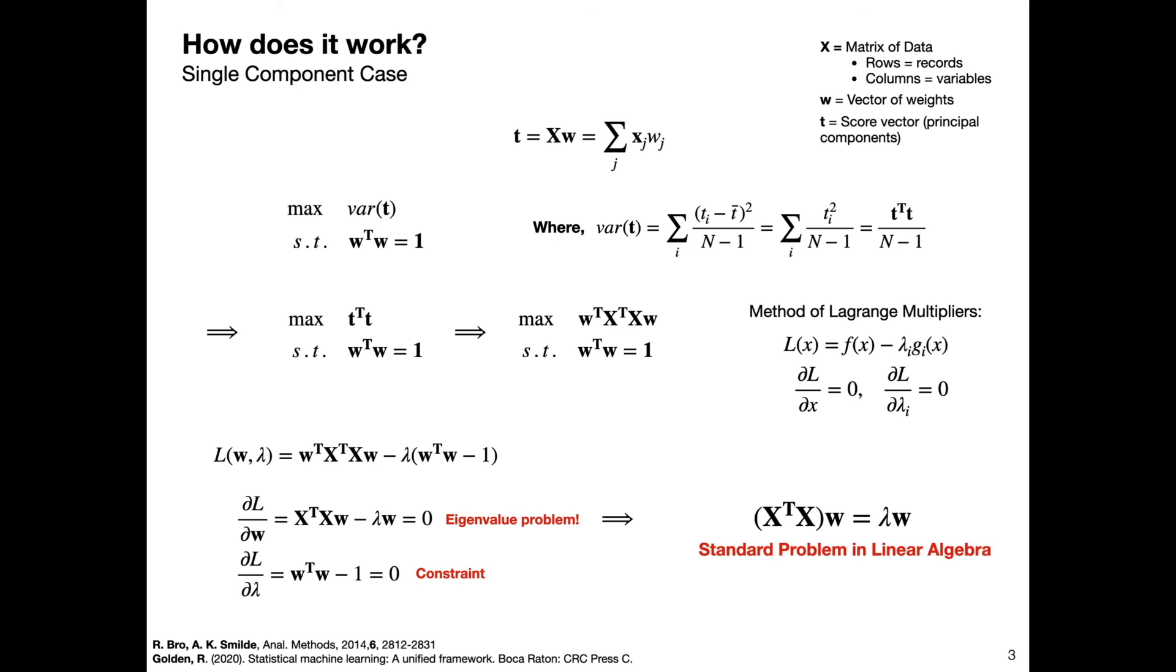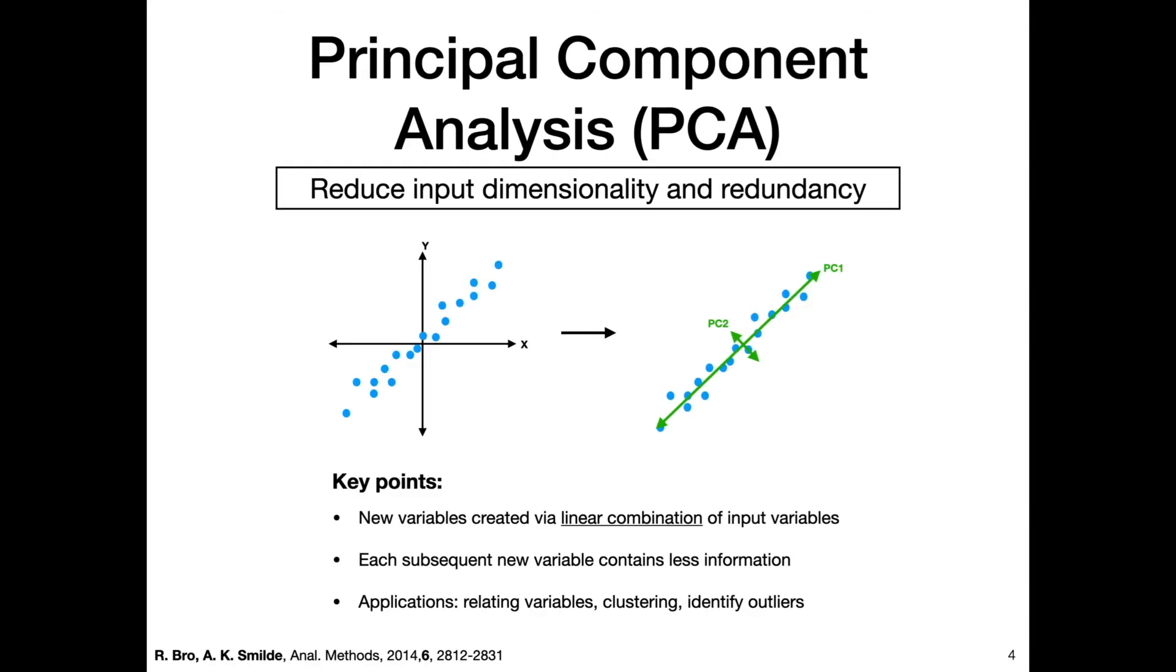You can define some threshold, like in the first slide where we could have just dropped PC2 because it wasn't giving us much additional information. You can do the same thing and truncate your variables after a certain amount of information is captured with your principal components.